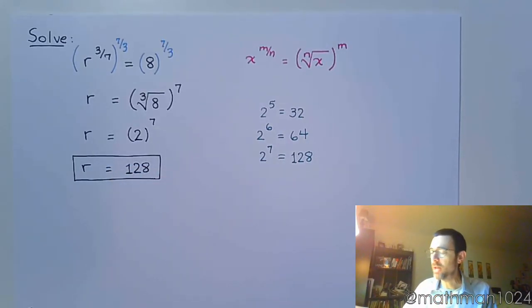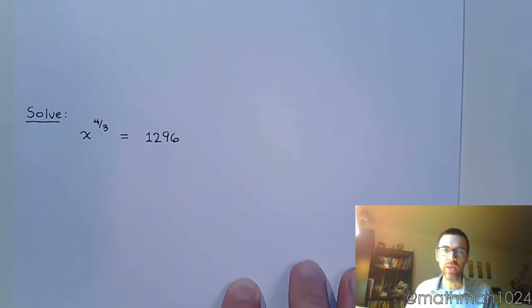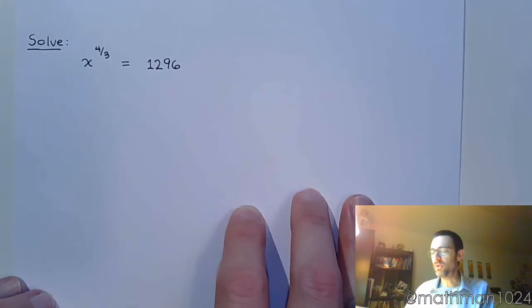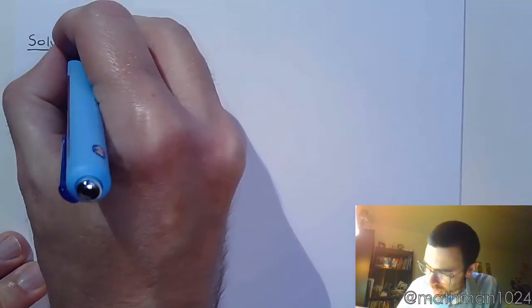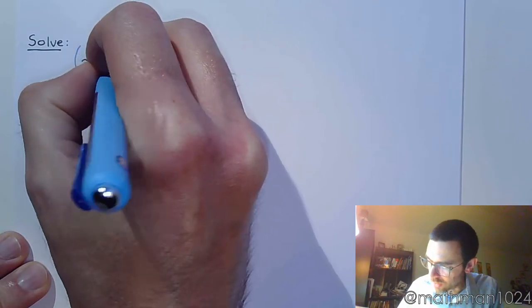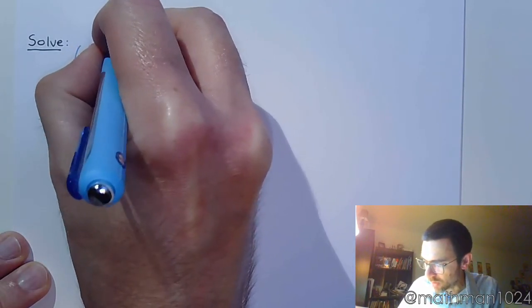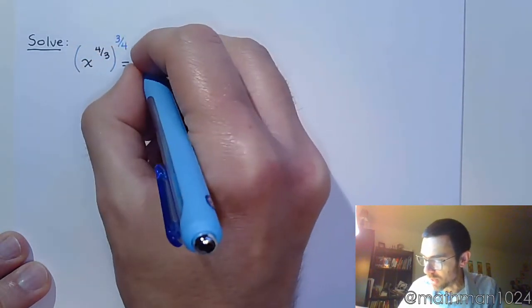There you go, really not too bad. Now let's look at the next one. In this next one we have x to the four-thirds equals 1296. Again, we recognize where our variable is - it's not in a power, it's the base. And so what we're trying to do is strip away that power, strip away that four-thirds, until only x remains. And just like the last example, we're going to raise both sides to the reciprocal power, so raise both sides to the three-fourths power.